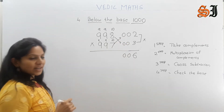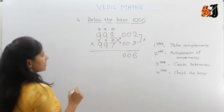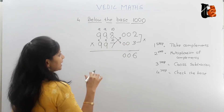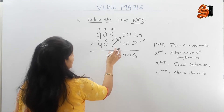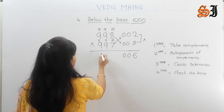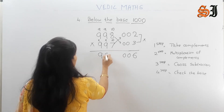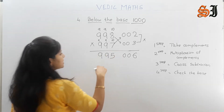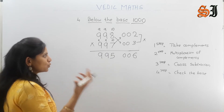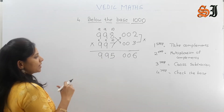Cross subtraction: 998 minus 3 equals 995. And 997 minus 2 equals 995. Both cross subtractions give 995.